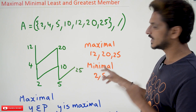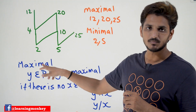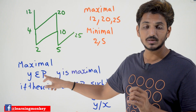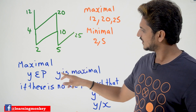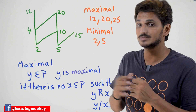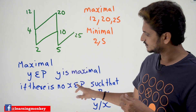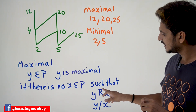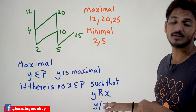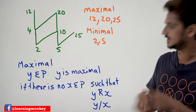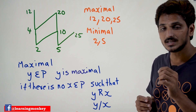By looking at the diagram you can identify maximal and minimal very easily, but you need to understand the definition also. The definition of maximal member: let Y belong to P, where P means poset. Y is maximal if there is no X belonging to P such that Y relates X — meaning Y divides X should not be found. If there is no such element X, then we say Y is a maximal member.